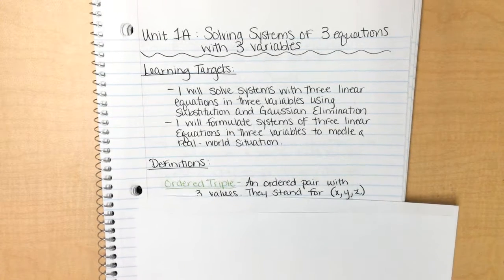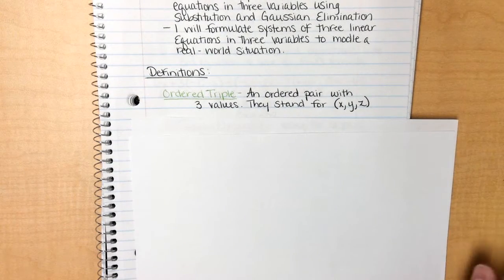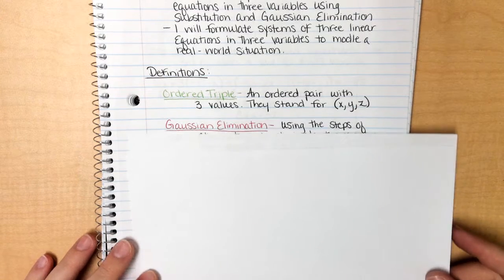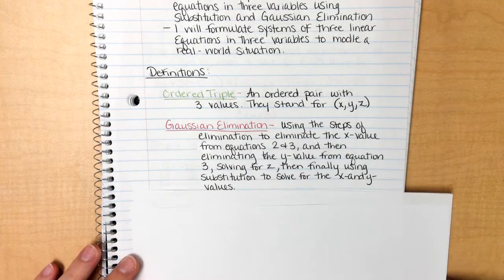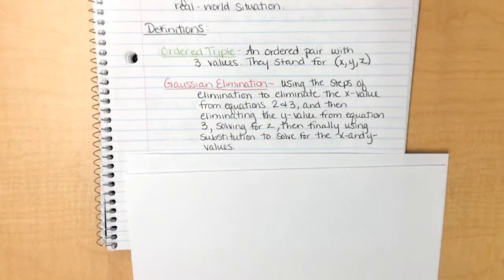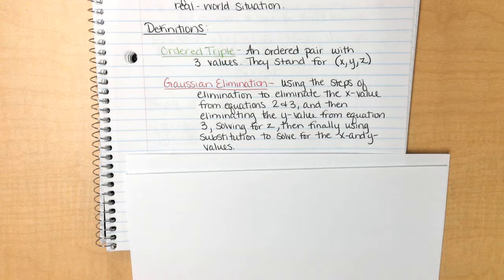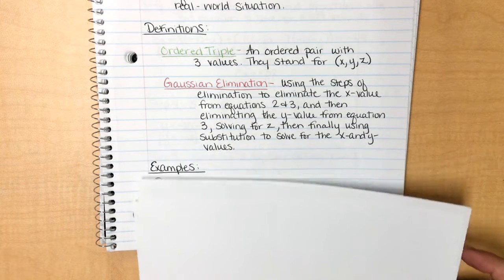My definitions: the first definition we need to talk about is an ordered triple — it's an ordered pair with three values, and they must go in that order. Gaussian elimination is using the steps of elimination to eliminate the x variable from equations 2 and 3, then we eliminate the y value from equation 3 and solve for z, and finally use substitution to solve for x and y. You will see an example of this in a minute.